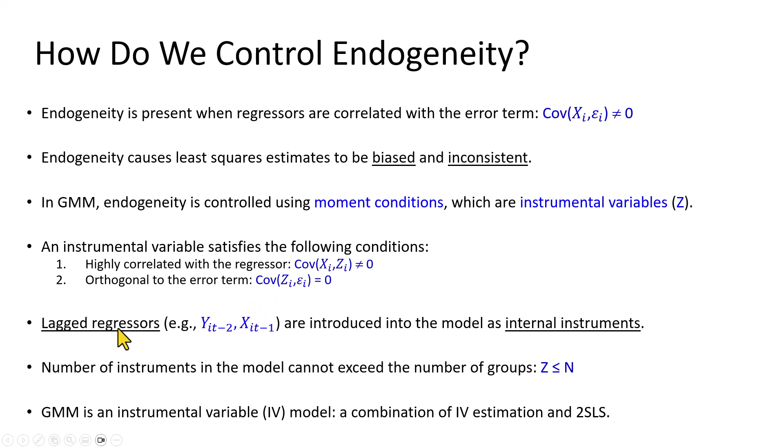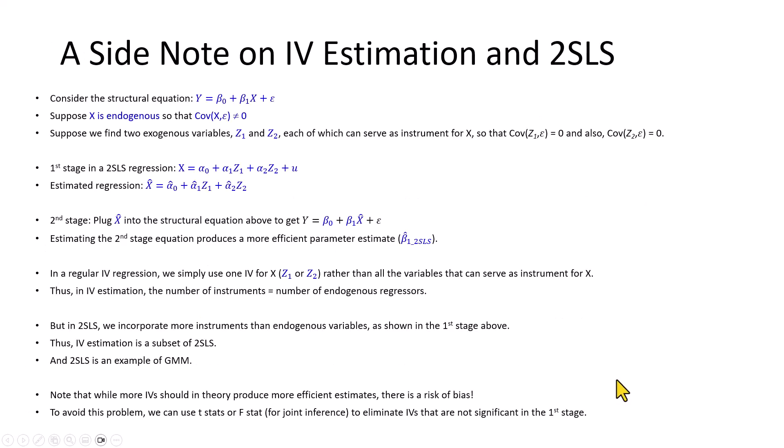In the model, lagged regressors, which are considered suitable, are introduced as internal instruments. And for that matter, the number of instruments cannot exceed the number of groups. And in the main, we find that GMM is actually an instrumental variable model, combining instrumental variable estimation and two-stage least squares. And for anyone desiring a quick review of those two concepts, you can pause the video right here and give it a quick read.